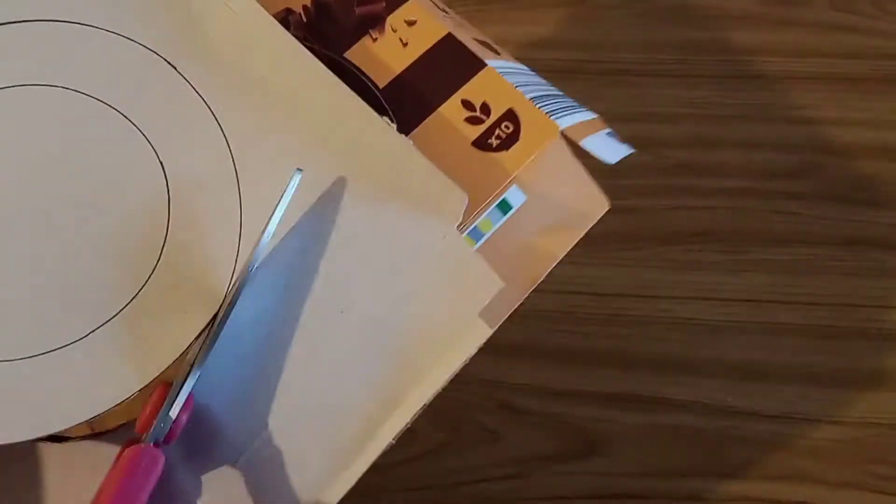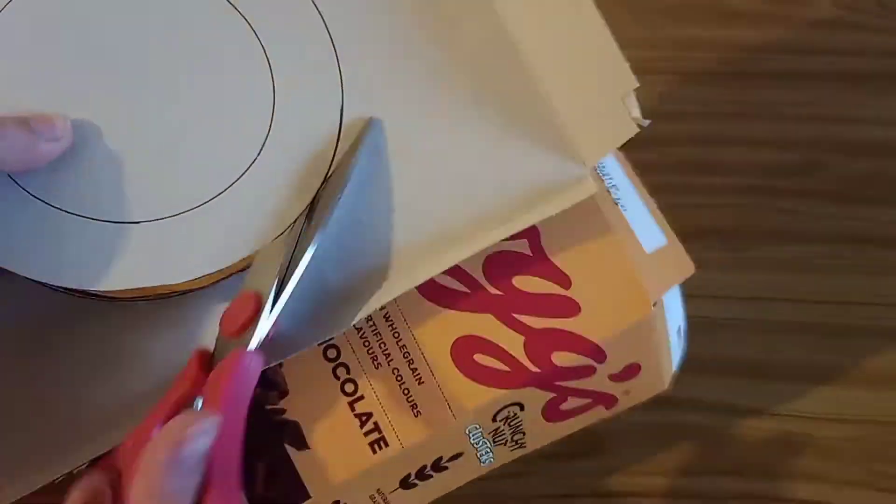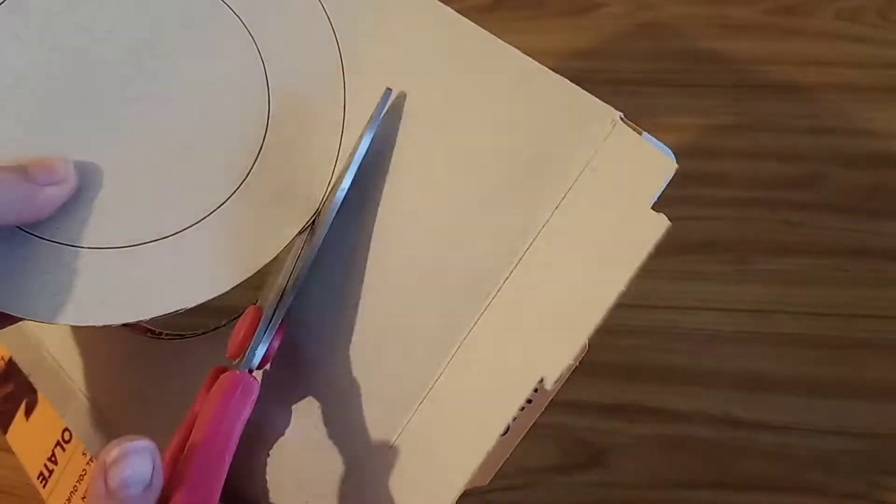The reason you're folding over the cardboard is because you want two of these circles altogether. I'm just going to call them rings from now on because it's a little bit easier.